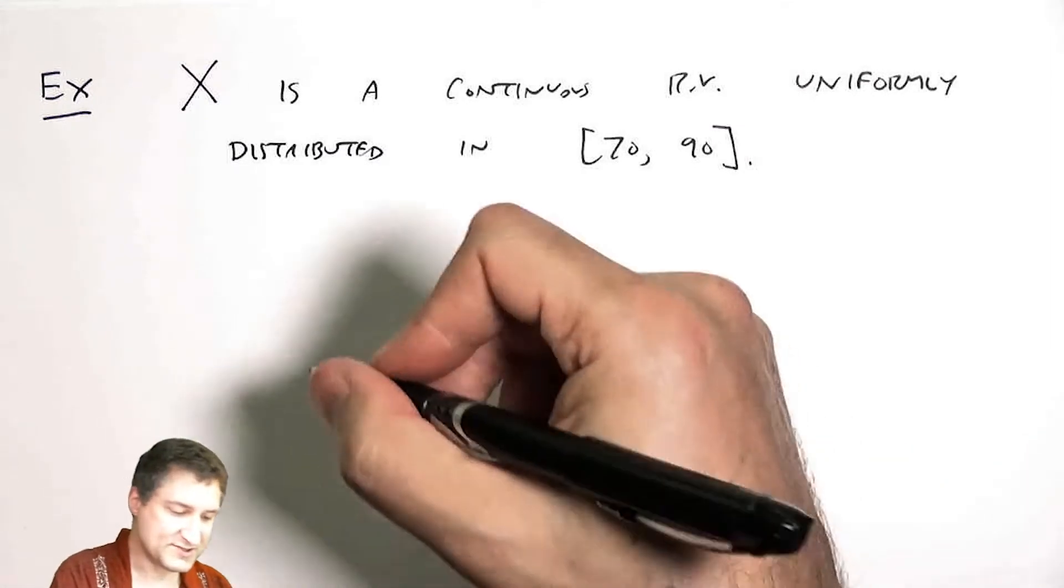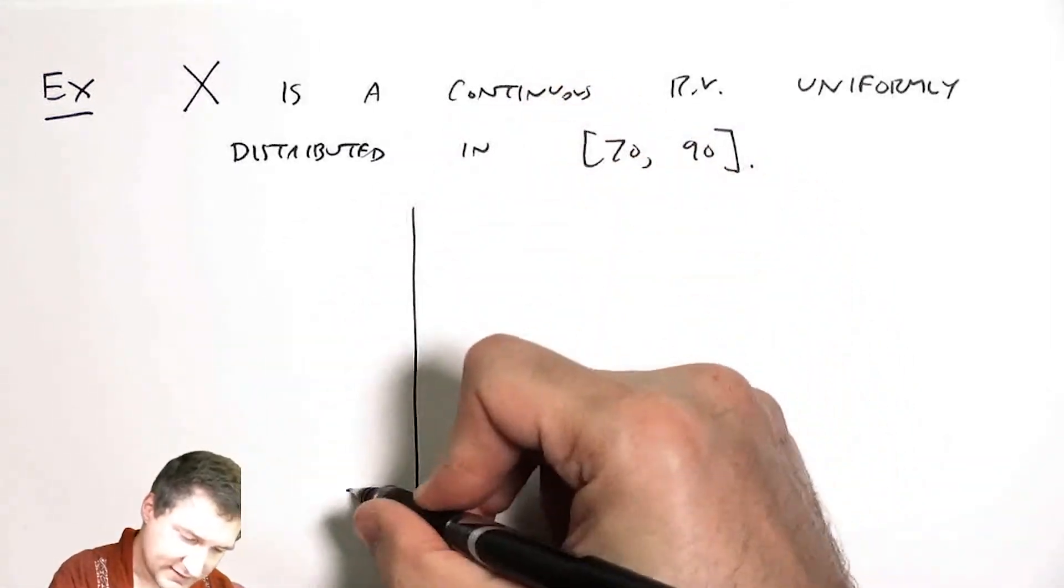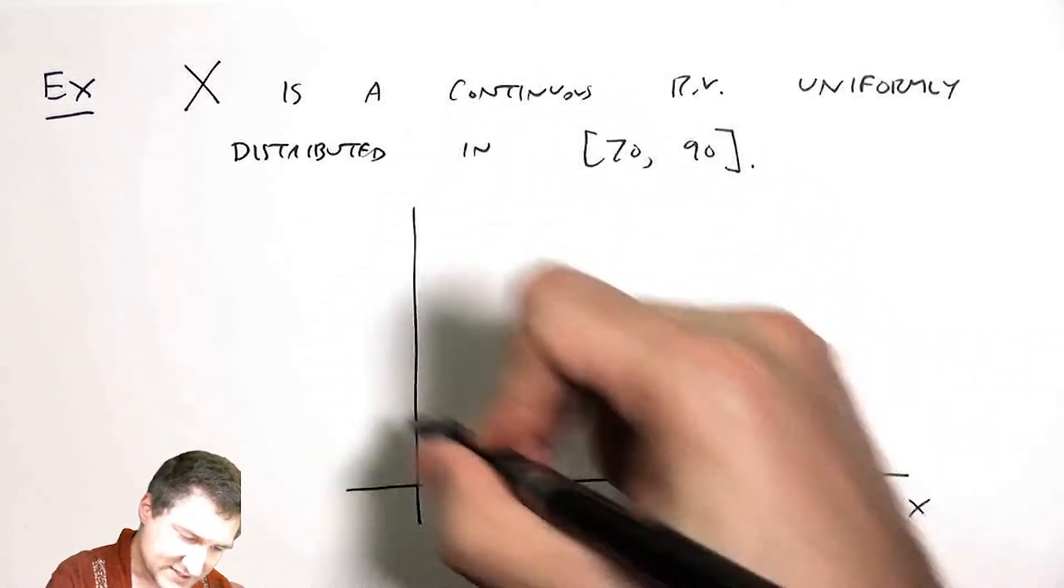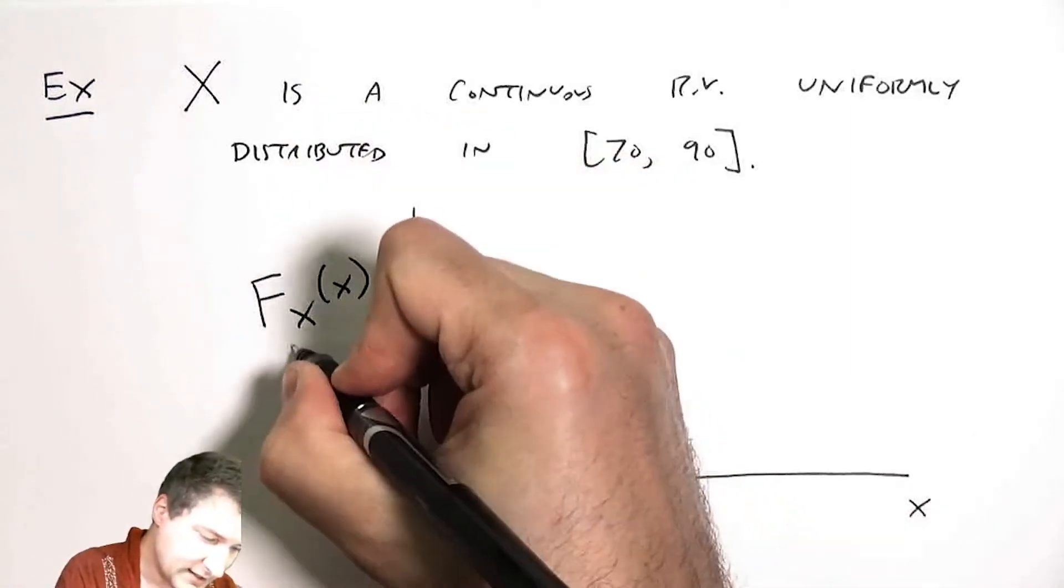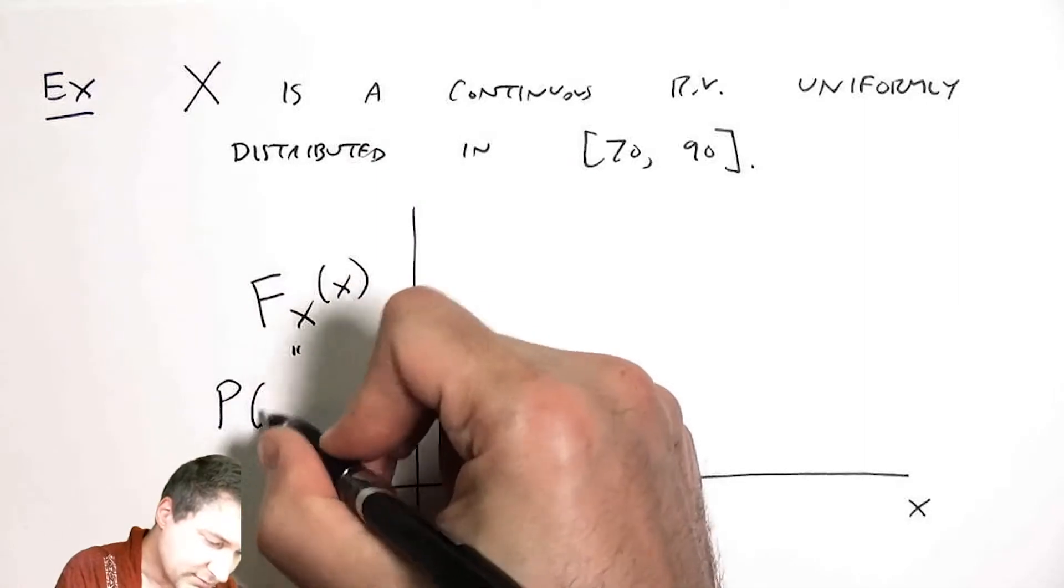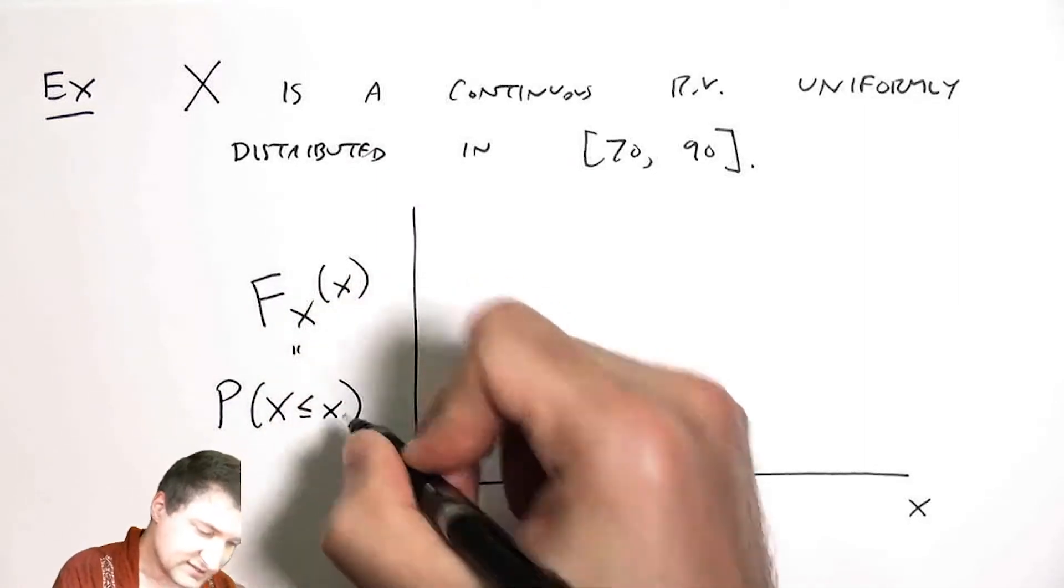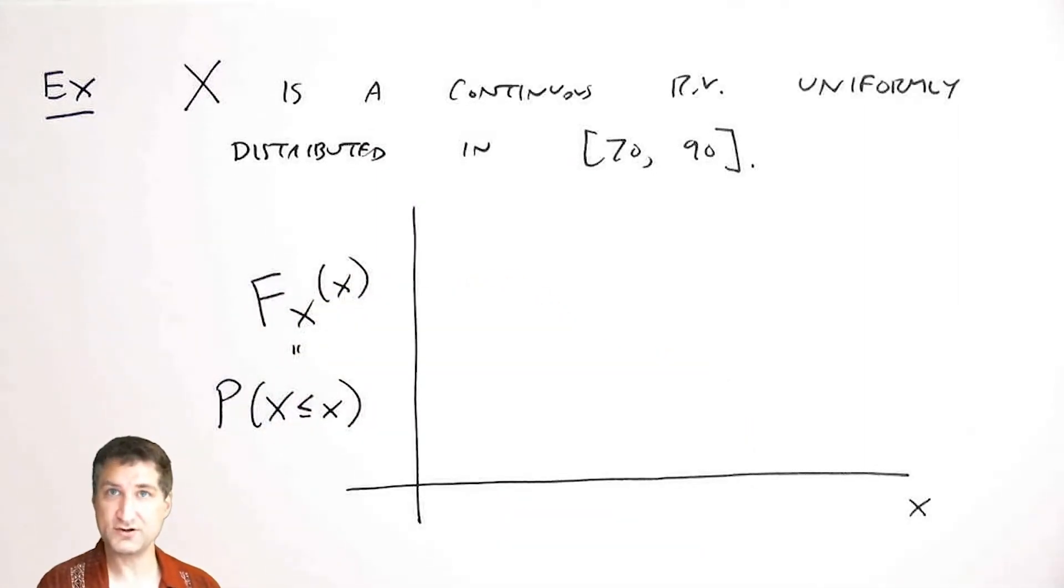So what is the CDF for that random variable look like? So here are the possible values. The CDF, remember we use this capital F notation, and this is defined as the probability that the random variable is less than or equal to a certain value.